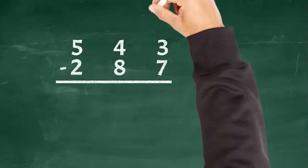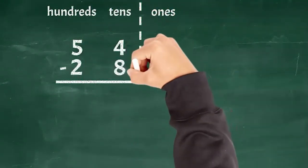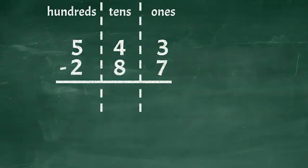Let's make sure we line up the digits in the ones place, the tens place, and the hundreds place before we begin subtracting. Just like with addition, when we subtract we will start at the smallest place value all the way to the right, that's the ones place.